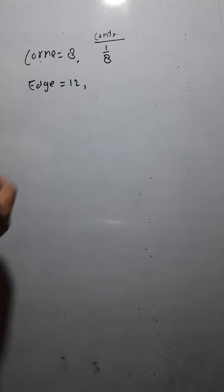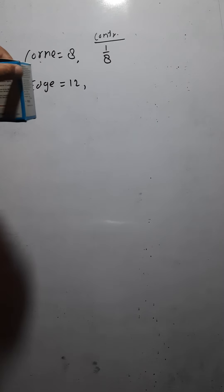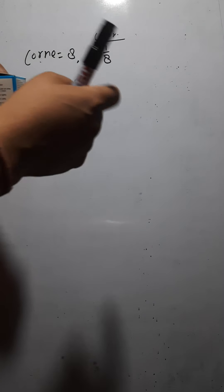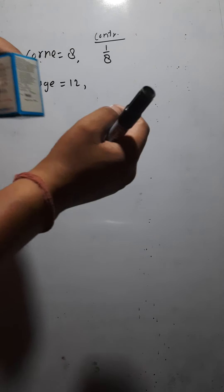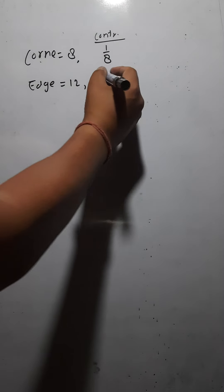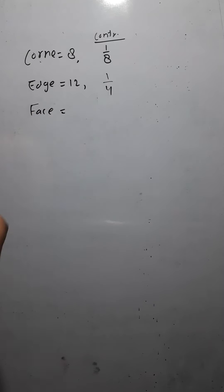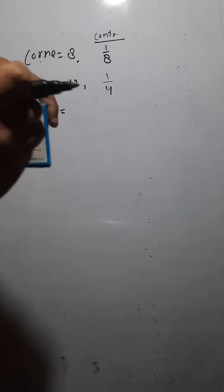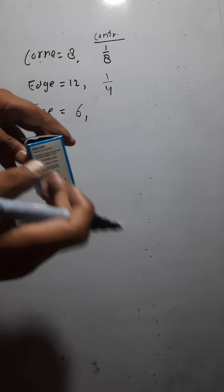If the particle is at the edge, other unit cells share it, so the contribution of a particle on the edge to each unit cell is 1/4. Similarly, if you have the particle on a face, it joins with one more unit cell, so the contribution of that face particle is 1/2. There are 6 faces in total.